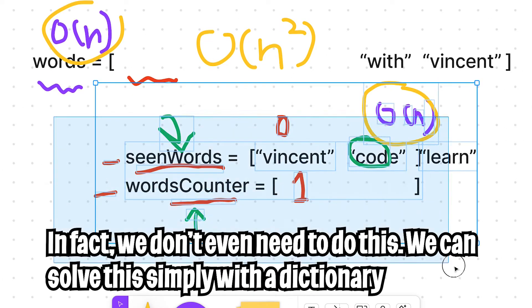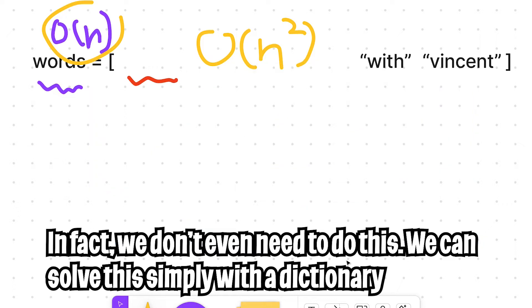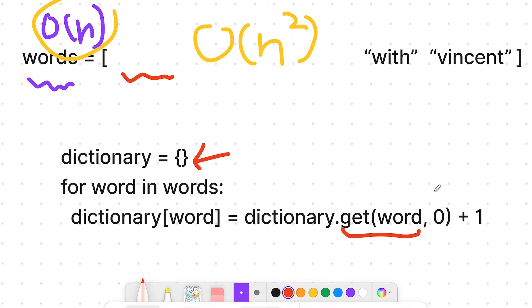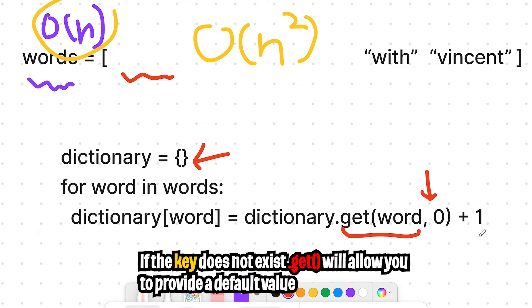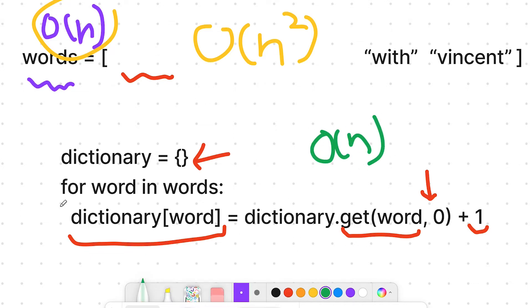But instead, with the dictionary, we can get rid of this whole searching process. All we have to do is get the word and default it to zero if we haven't seen that word, and then add one to it to update the count. And then basically for that word, we just update the dictionary. And the runtime of this is only O of n.